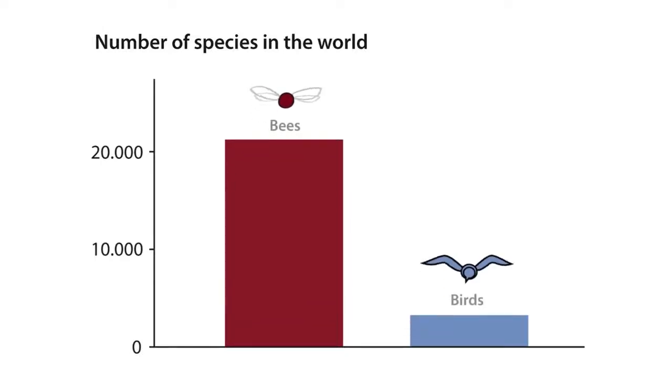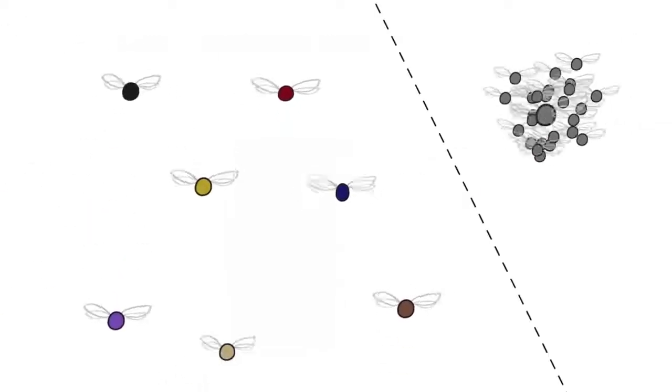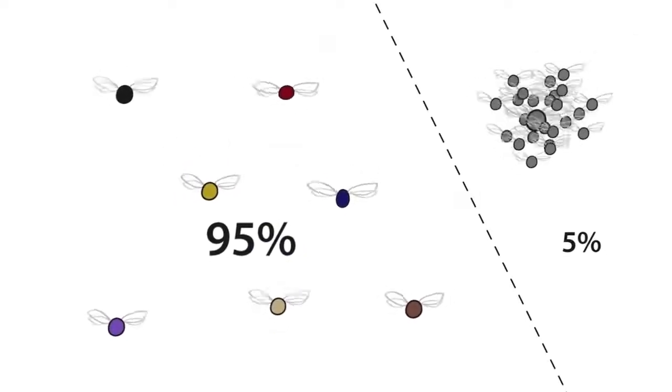For context, there are twice as many bee species as bird species. Most live solitary lives rather than nesting in colonies with a queen.